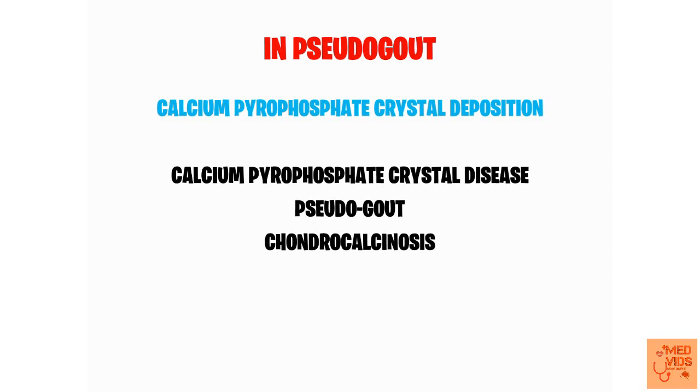These diseases are also called chondrocalcinosis, so basically they have three names. There are three main types of pseudogout: sporadic, hereditary, and secondary.